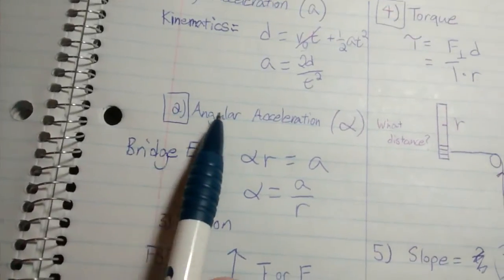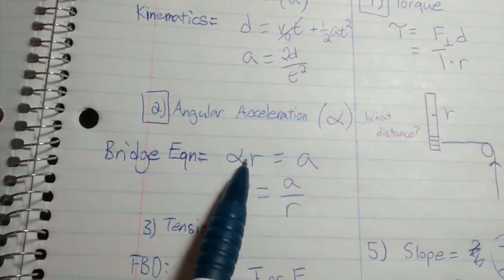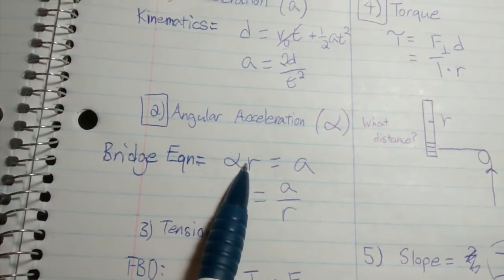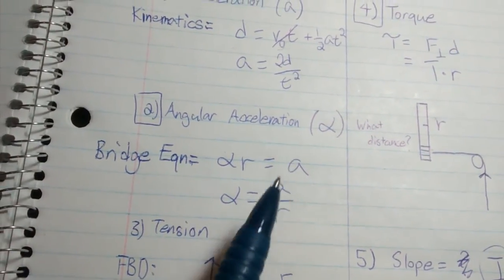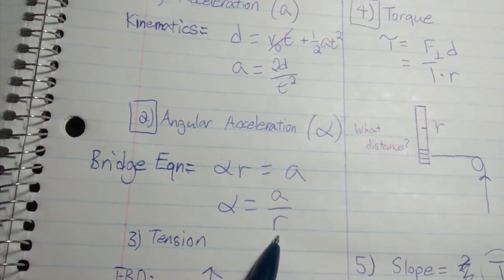Number two is angular acceleration (alpha). There's a bridge equation which says alpha times radius equals acceleration. Rearranging, you get alpha equals a over r, and r equals 0.009 meters.